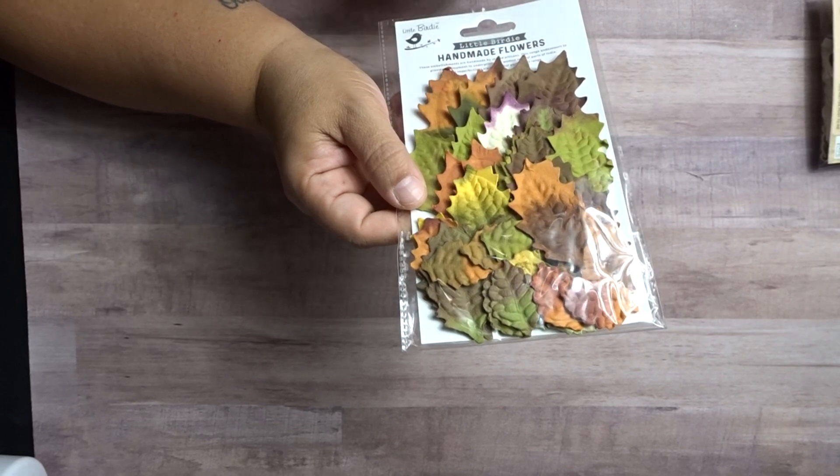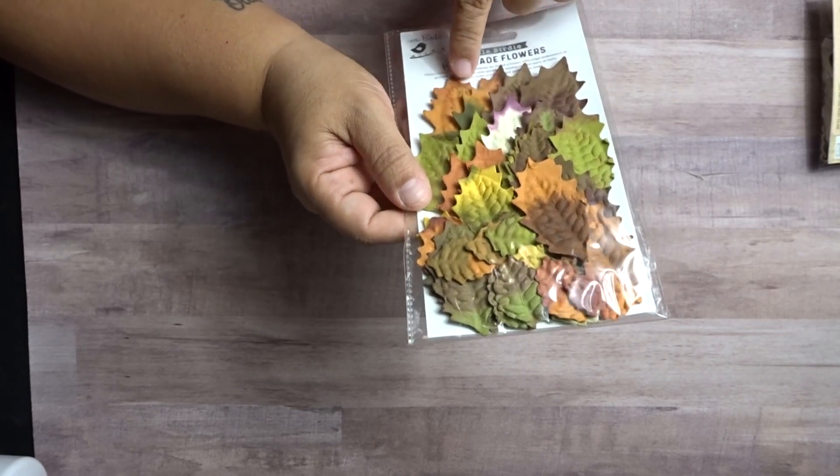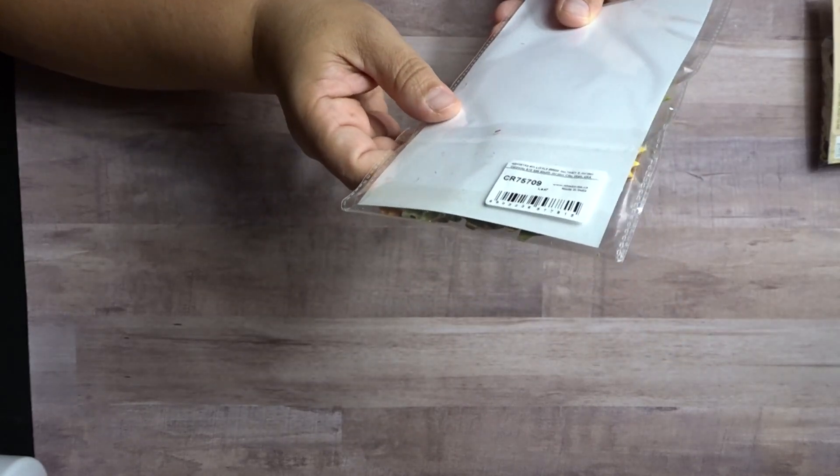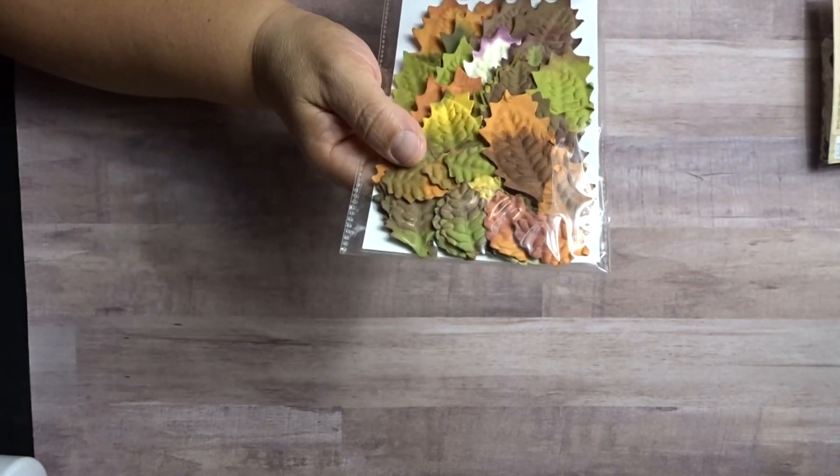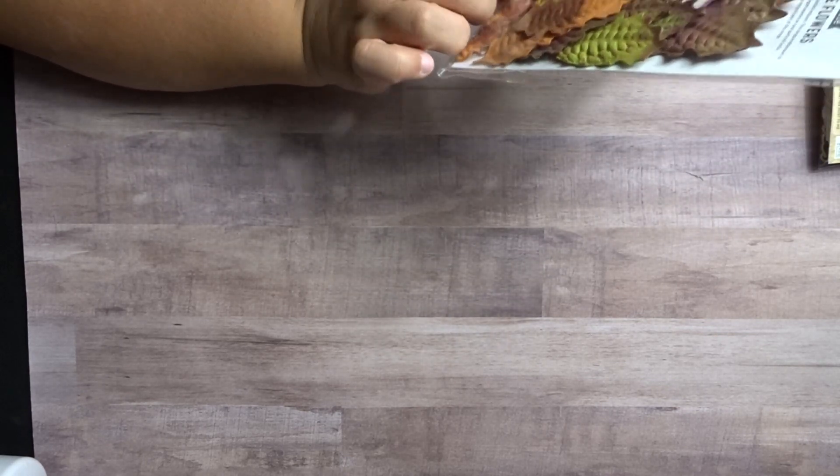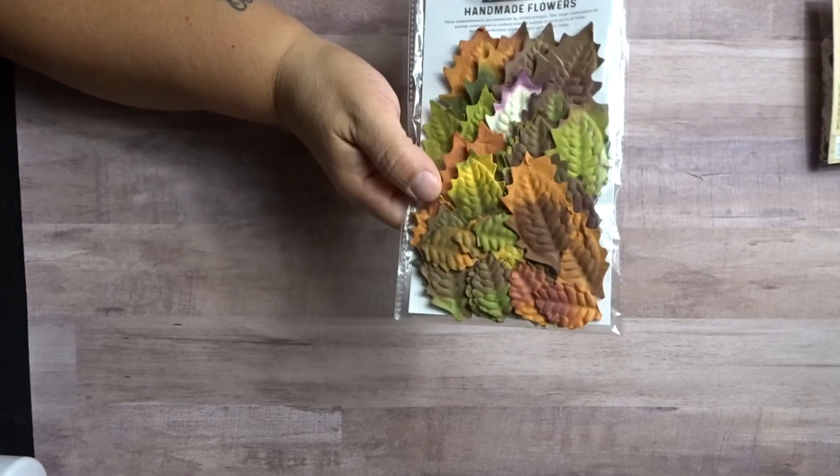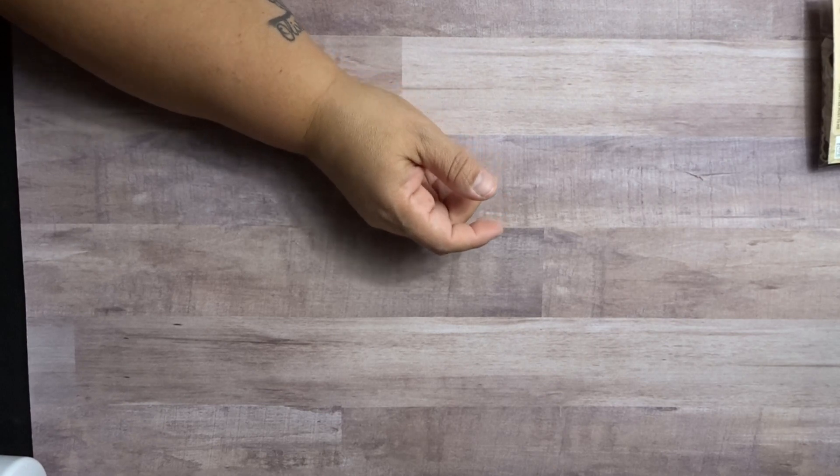These leaves were different. I have the Petaloo leaves. And these were a lot bigger. And these are called just Leaf. And it doesn't even tell you how much it comes with. There's a good amount. I want to say there's at least 20. So, that's good there.